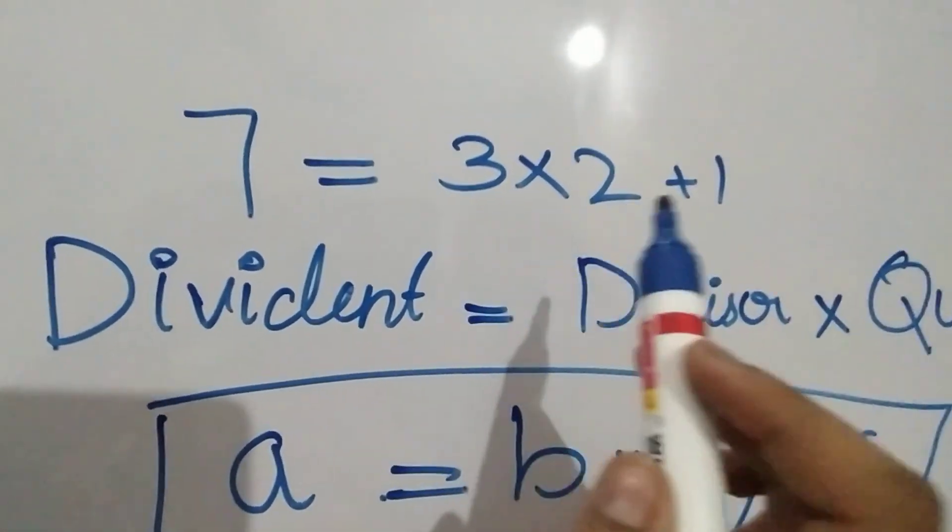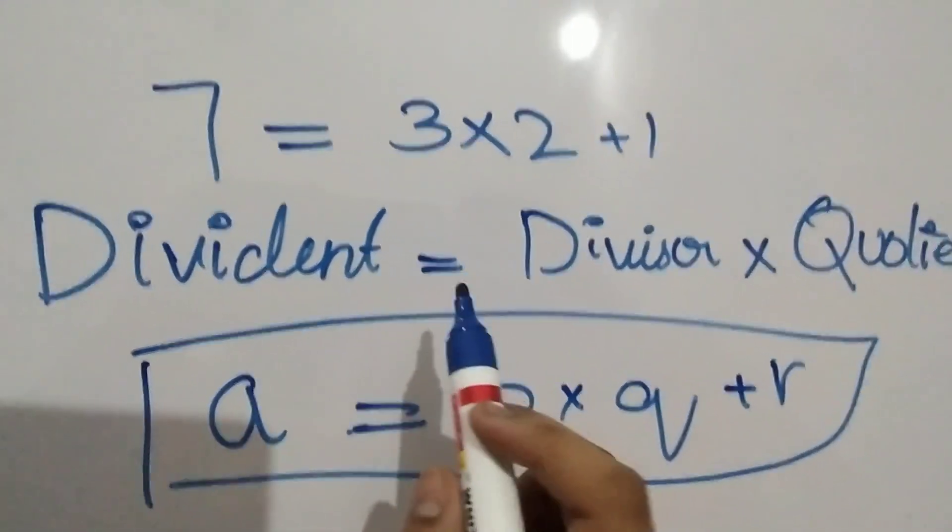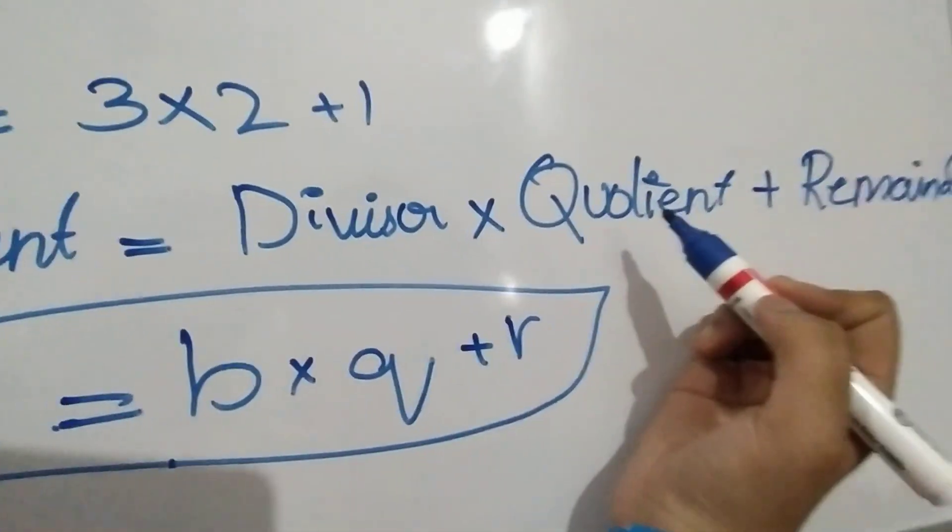We can also write it out like this. 7 is equal to 3 into 2 plus 1. Where dividend is equal to divisor into quotient plus remainder.